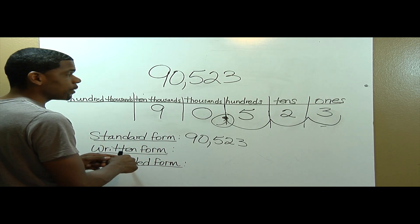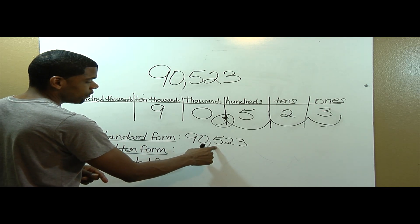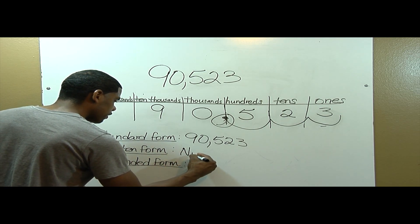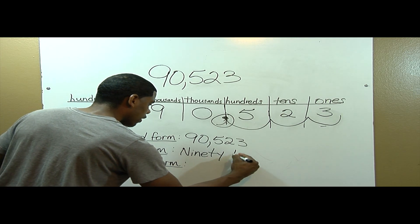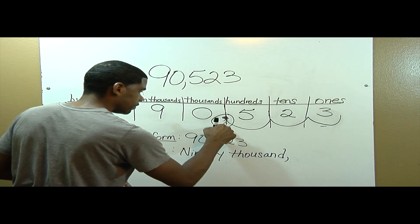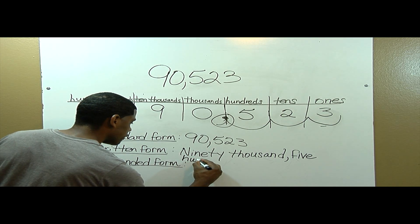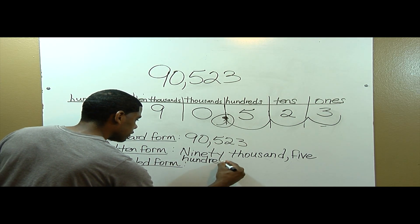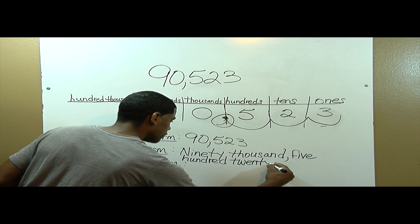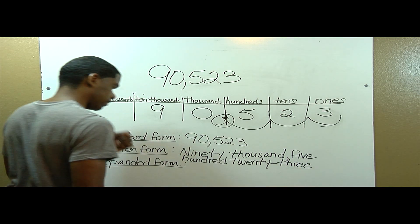Written form means that we're going to write the number just the way we say it. I say ninety thousand five hundred twenty-three, so I'll write it that way. Ninety thousand, five hundred twenty-three. And I'll put a hyphen here.